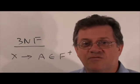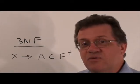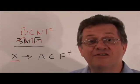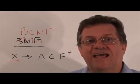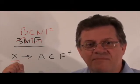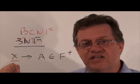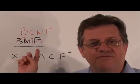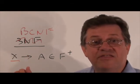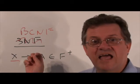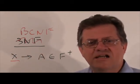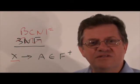Now for Boyce-Codd Normal Form, in BCNF for every functional dependency the left-hand side has to be a super key, whether the right-hand side is prime or non-prime. In Third Normal Form, if the right-hand side is prime we don't care if the left-hand side is a super key. But in BCNF the left-hand side has to always be a super key.